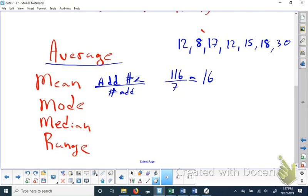The mode is the one that occurs the most often. So you can see by looking at the ones we have written, we've got two 12s. We've got 1 eight, 1 seventeen, 1 fifteen, 1 eighteen, 1 thirty. So our mode would be 12.